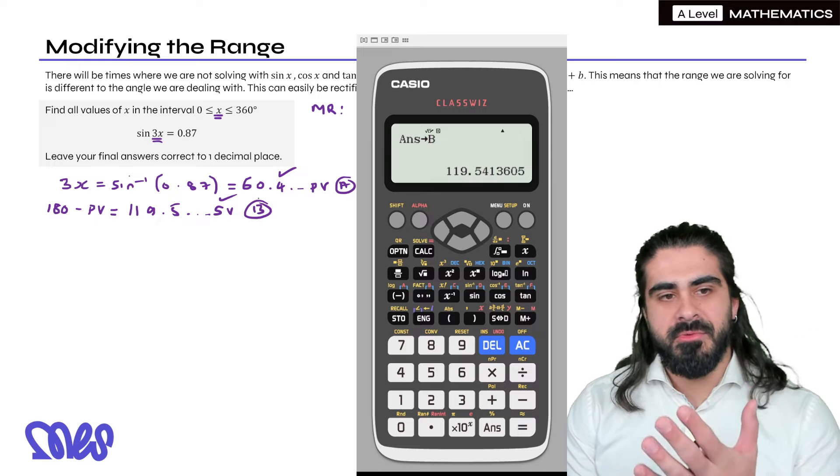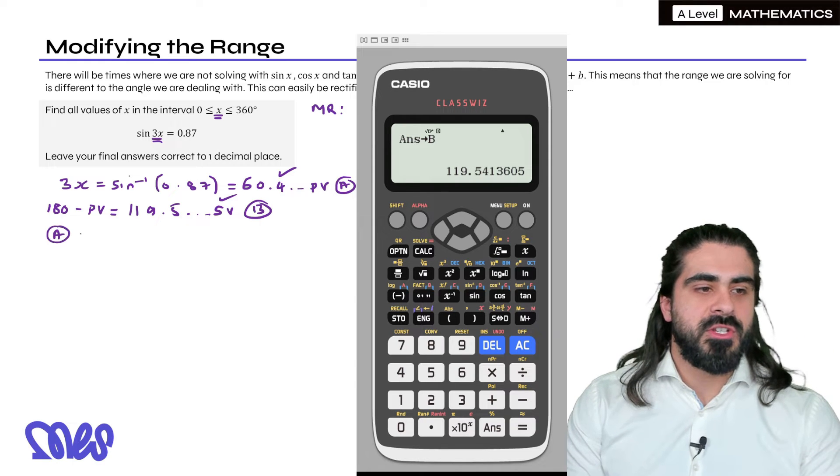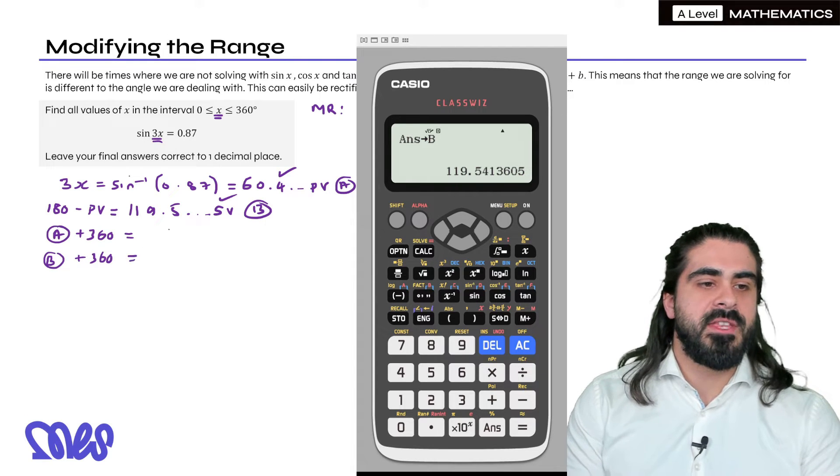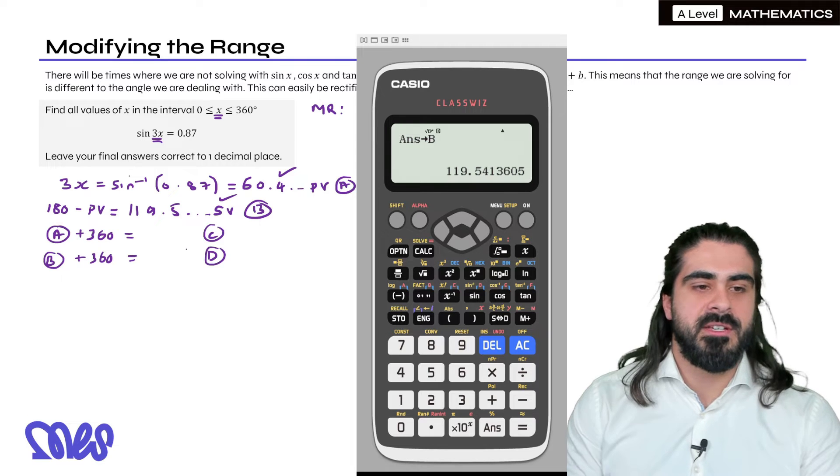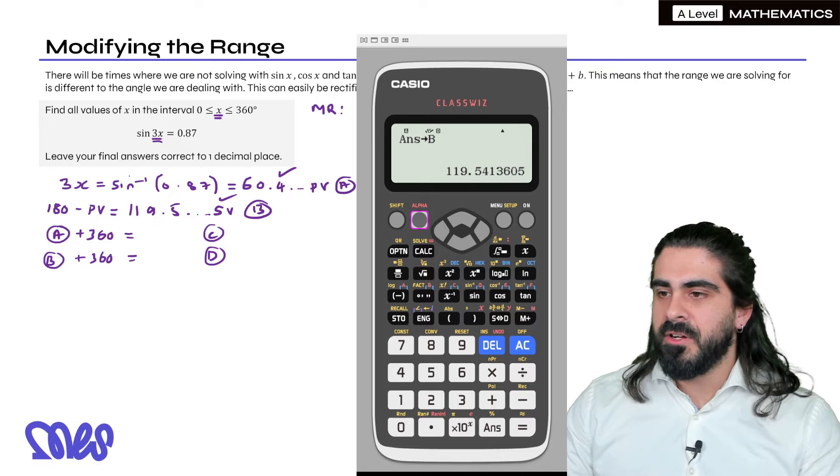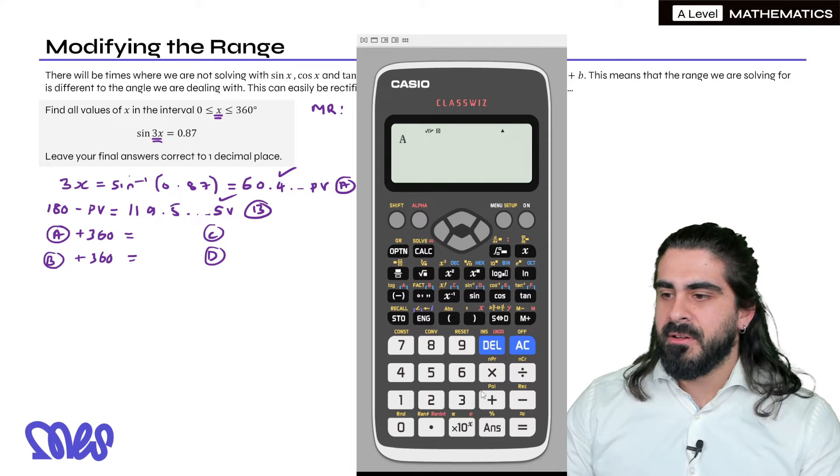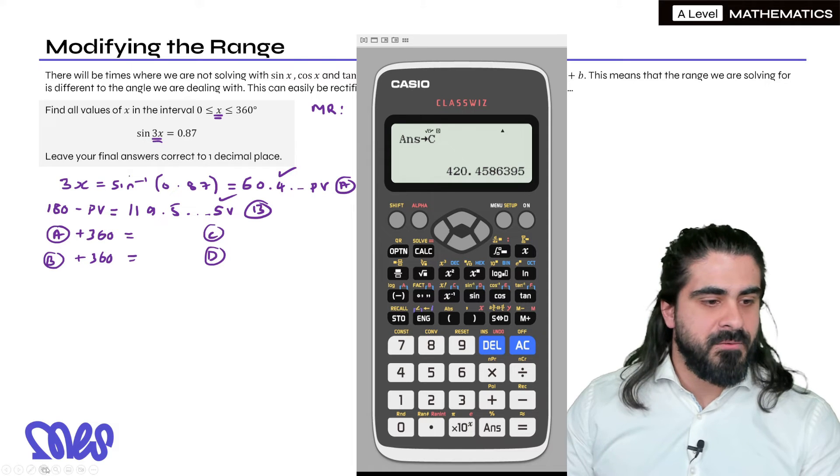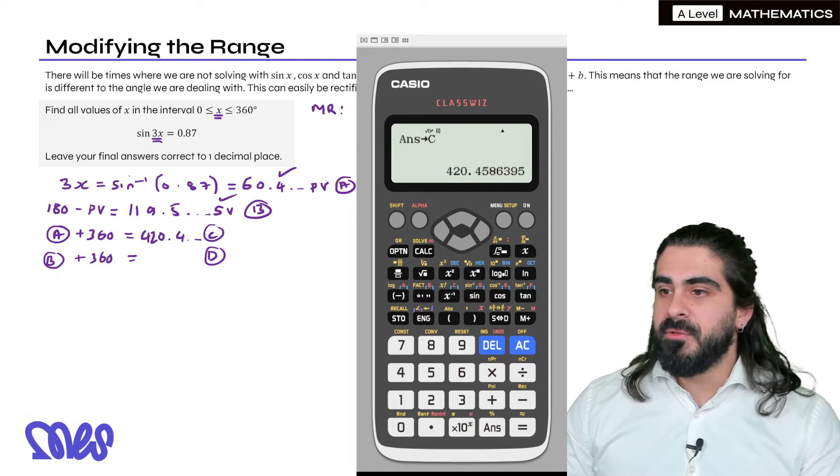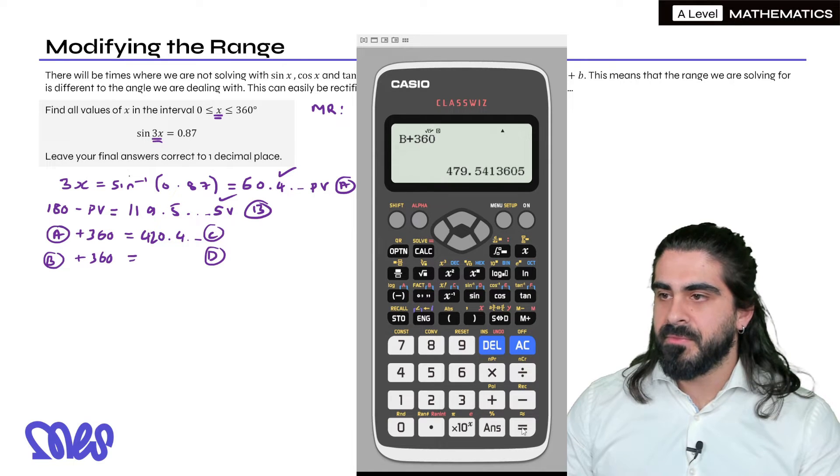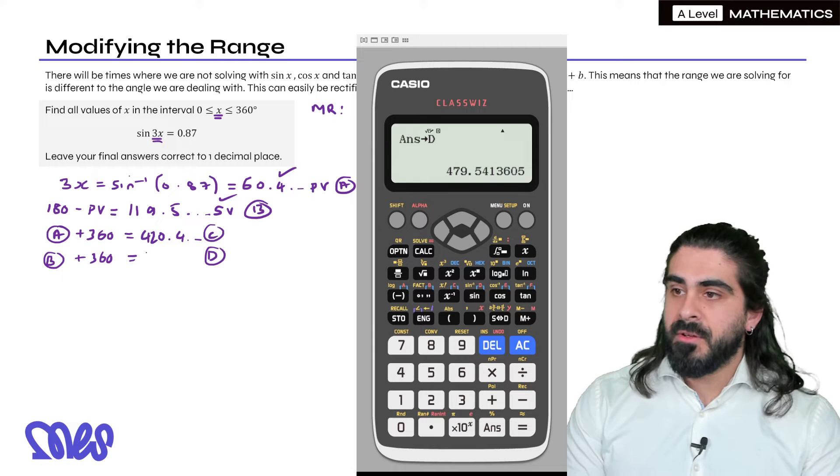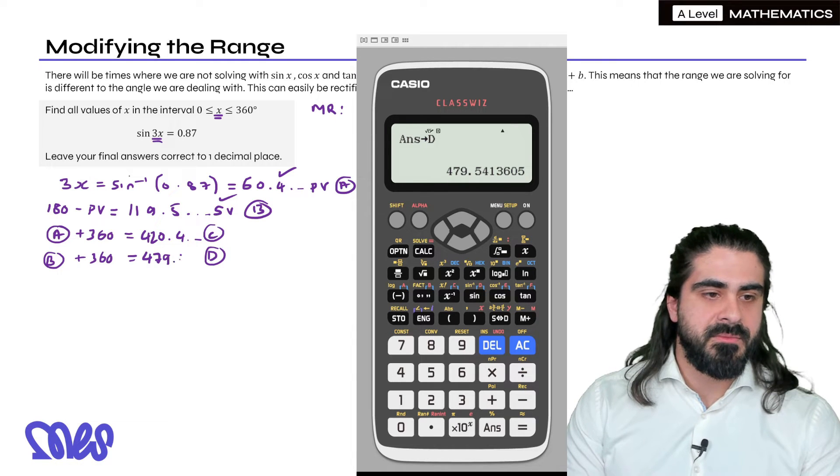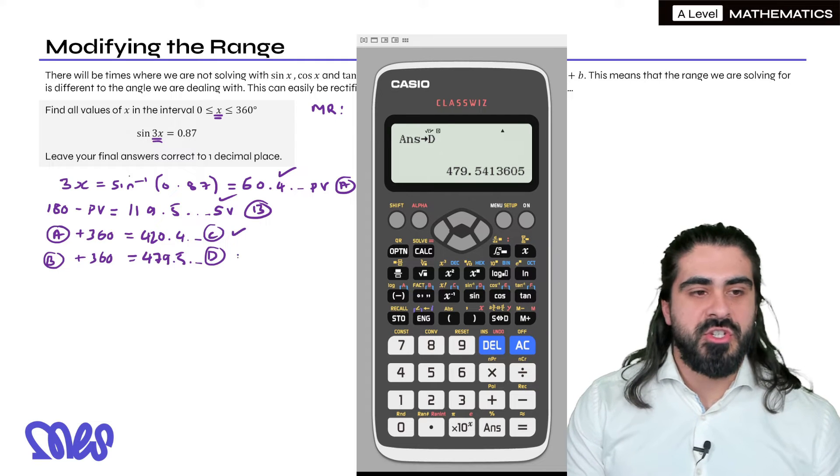So we can start thinking about adding 360. So this saves you a lot of time. We're just going to do A plus 360 and we're going to do B plus 360. Now whatever this is, I'm going to store as C. Whatever this is, I'm going to store as D. So I'm kind of predicting what's happening here. So we do alpha. So you press the alpha button now. Then you see this little A comes up at the top. We do alpha A plus 360. Then we're going to store that as C. So we have 420 point dot dot dot. Then we're going to do B alpha B plus 360. Then we're going to store that as D. 479.5 dot dot dot. Then we have to think, look, these are in the range. Can we keep going?